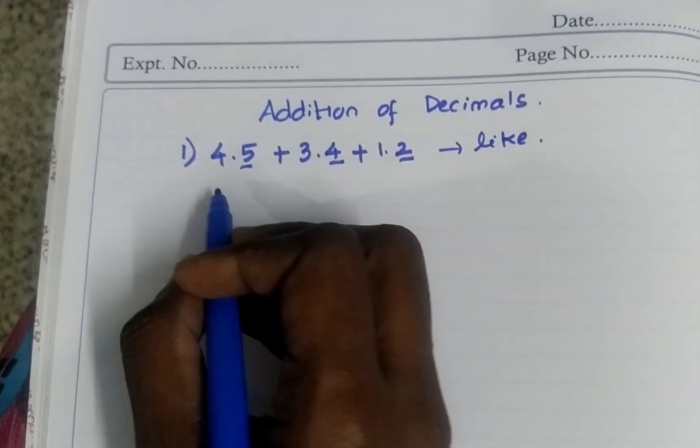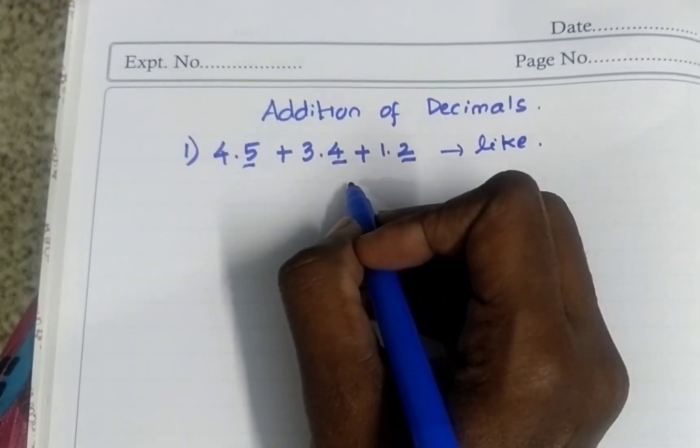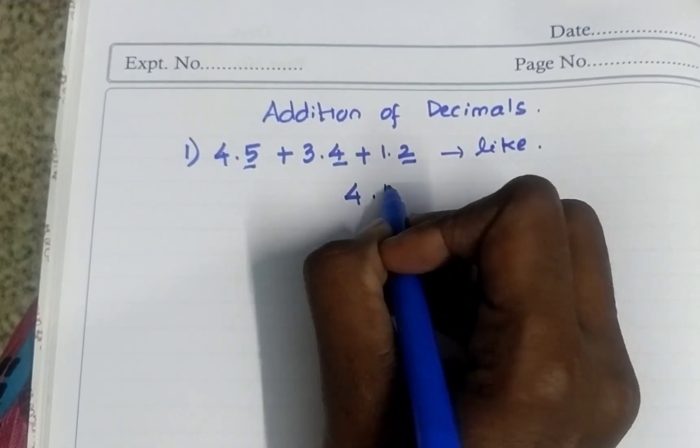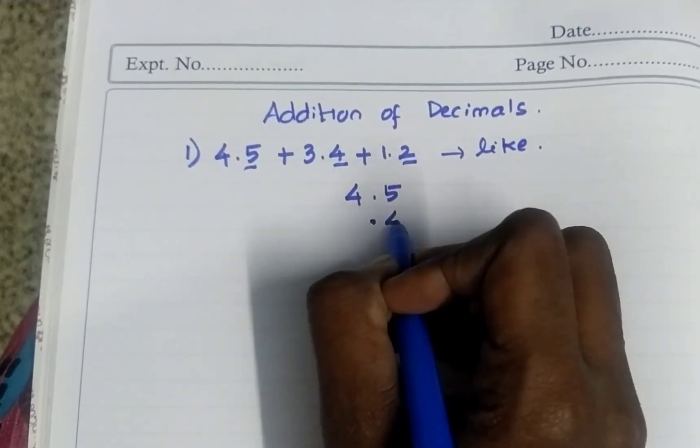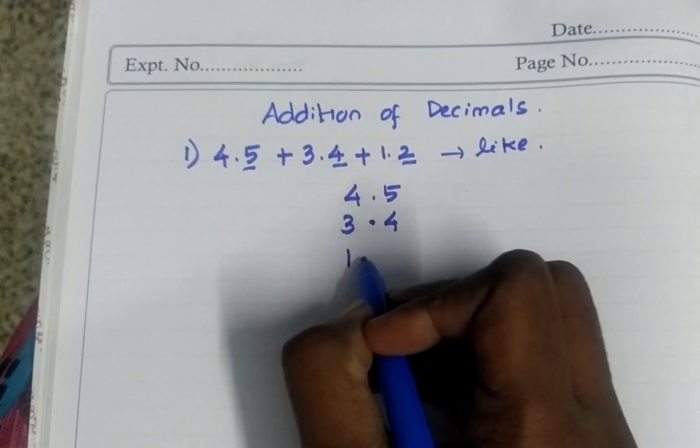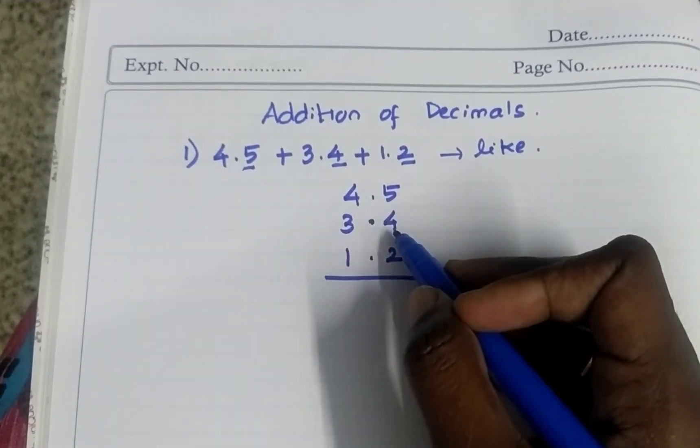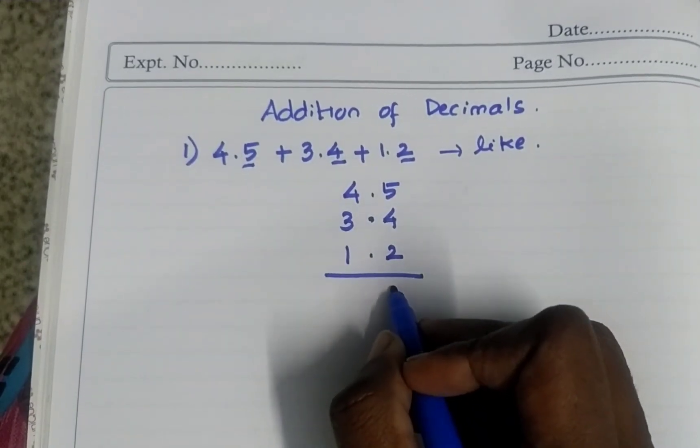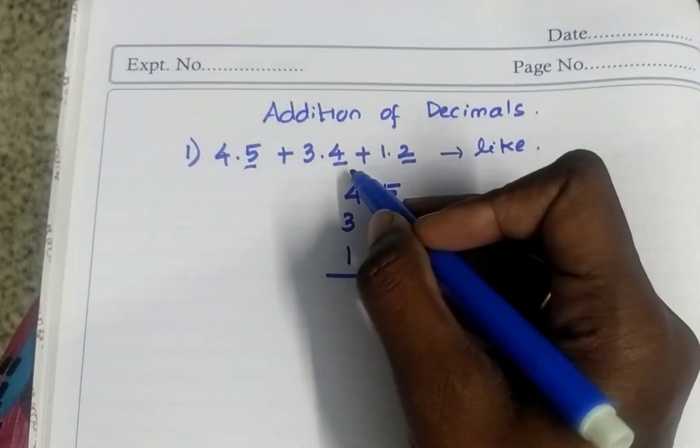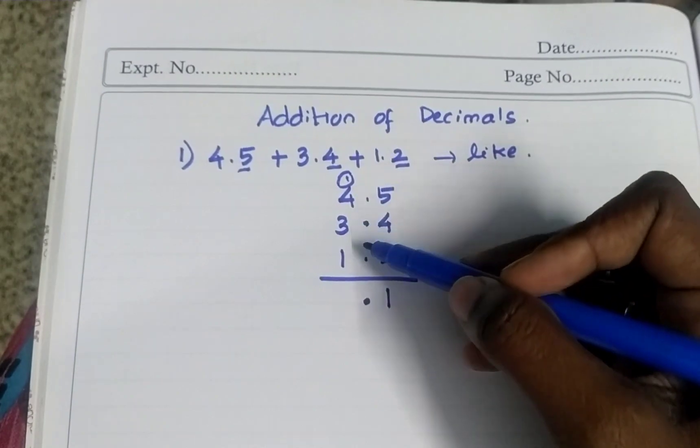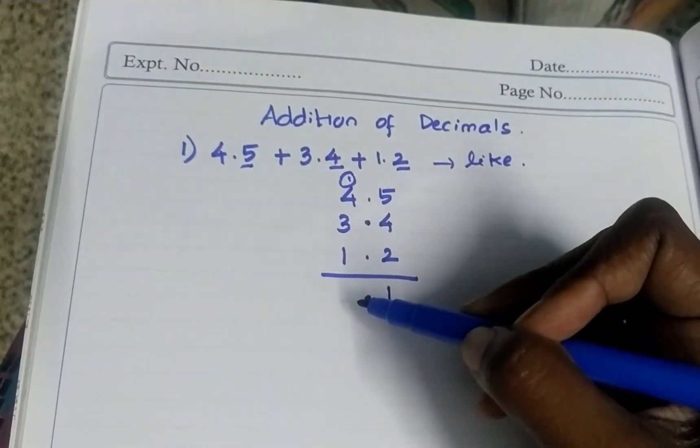So adding like decimals, first let's see. Now all are like decimals, so it is easy. 4.5, the point should come straight. 3.4, 1.2. Now normal addition only. 5 plus 4, 9. 9 plus 2, 11. So same carry over. 1 here, point here and carry over. The point, wherever the point you should also keep straight to that.